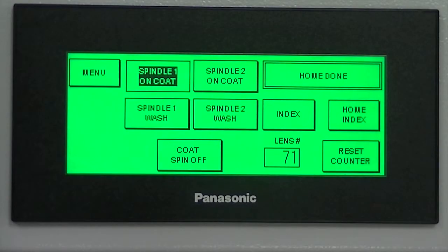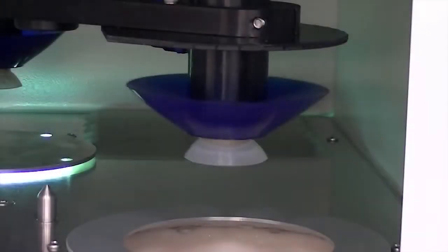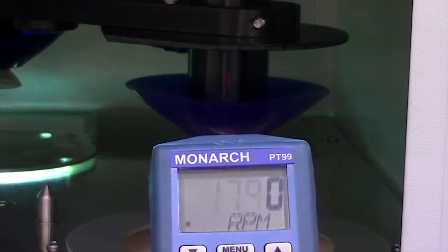With the spindle on option still selected, press the option for wash speed. Point the tachometer at the reflective tape and hold in the button on the top.